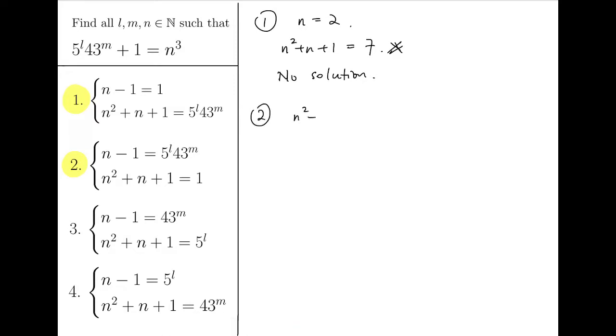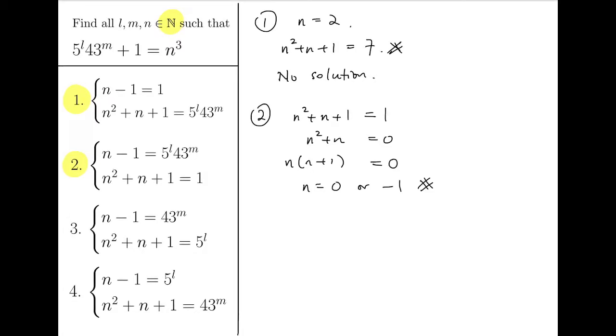Well, for the second case, N squared plus N plus 1 is 1, and so, N squared plus N is 0, so we factorize and solve for it. We will have N equals 0, or minus 1. But, bear in mind, that we are looking at natural numbers. So, natural number starts from 1, and so, we have no solution again.